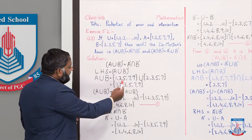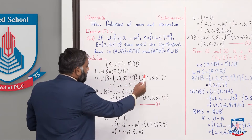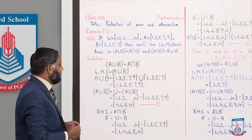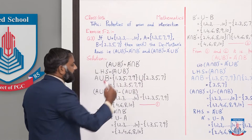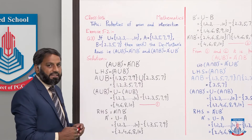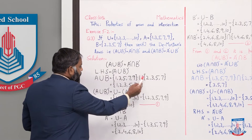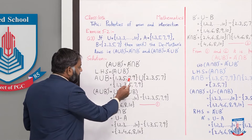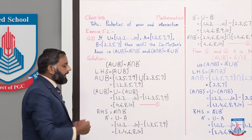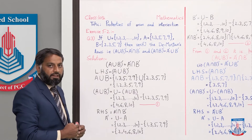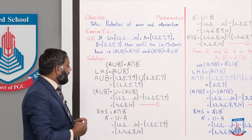We write the values of set A, the union symbol, and then values of set B. In a union, we write all the elements of both sets. So A∪B = {1, 2, 3, 5, 7, 9} — those that are repeated are written only once. We have found A∪B.